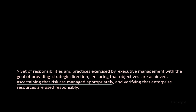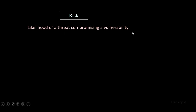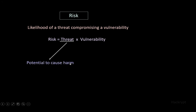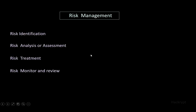From the definition of security governance, one of the tasks is to ascertain that risks are managed appropriately, achieved through risk management. A risk is the likelihood that a threat compromises a vulnerability, so risk is a combination of threat and vulnerability. A threat is anything with the potential to cause harm to our assets — for example, malware, hackers, or natural disasters. A vulnerability is a weakness or loophole — for example, insecure communication, anonymous login, or no backup. The process of risk management involves four stages: identification, analysis, treatment, and monitoring.